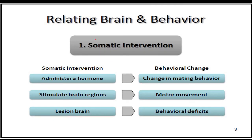What's the relationship between the brain and the behavior? The first is somatic intervention — from cell to behavior. For example, when you administer a hormone, there will be a corresponding effect. When you administer testosterone in males, there will be a dramatic change in the mating behavior of that organism, making males more aggressive when it comes to mating pattern.